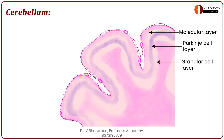Here you can see that this is the outer molecular layer, this is going to be the Purkinje cell layer, and from here to the medulla is your granular layer. So this is broadly the division of the cerebellum. Let us now add some cells to this.